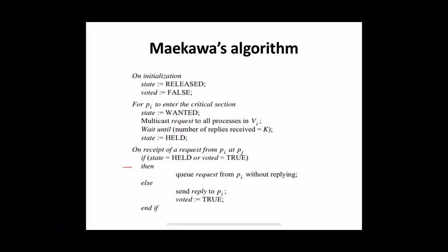Now let us get into the algorithm. In the initialization part, for every process two variables are kept: one is called 'state' and the other is called 'voted'. State will be 'released' initially for every process, and voted will be false. Now if process Pi wants to enter into the critical section, it will first change its state to 'wanted'. Then it should get permission from all the processes which are members of its voting set Vi. So Pi will multicast a request to all processes in Vi.